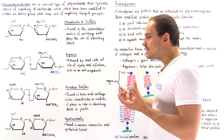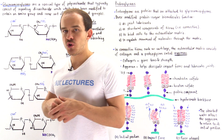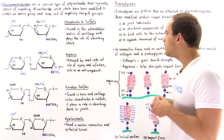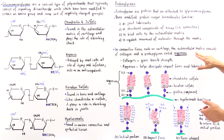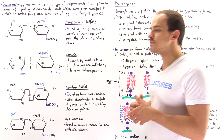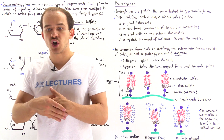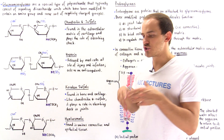One example of a well-studied proteoglycan is aggrecan. Aggrecan is found in the extracellular matrix of connective tissues such as cartilage, and this is what we're going to focus on in this lecture.